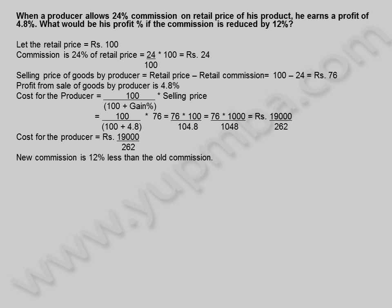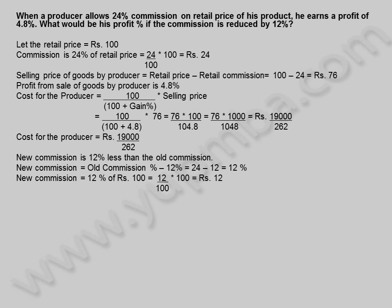New commission is 12% less than the old commission. New commission = 24 − 12 = 12%. New commission = 12% of 100 rupees = 12 rupees. New selling price of producer = retail price minus new commission = 100 − 12 = 88 rupees.